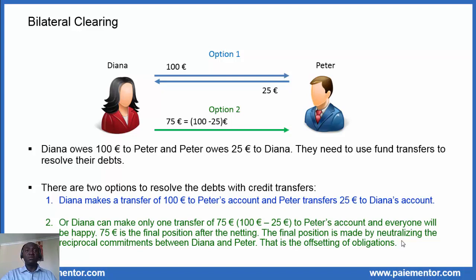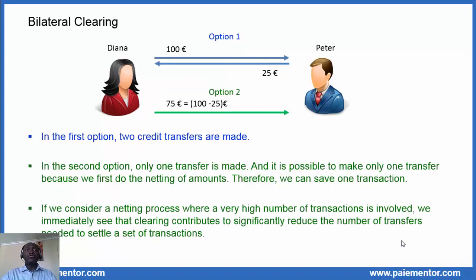75 euro equals 100 euro minus 25 euro. The final position is made by neutralizing the reciprocal commitments between Diana and Peter — that is what is meant by the offsetting of obligations. As already mentioned, two credit transfers are needed in the first option. In the second option, only one transfer is made, and it is possible to make only one transfer because we first do the netting of amounts.